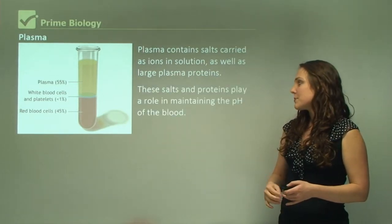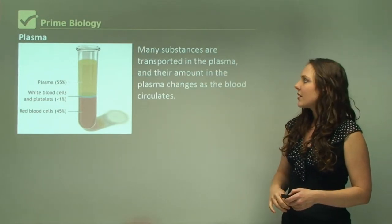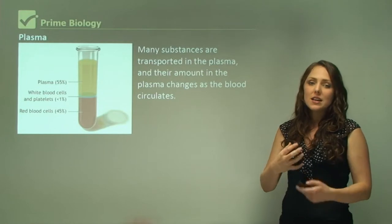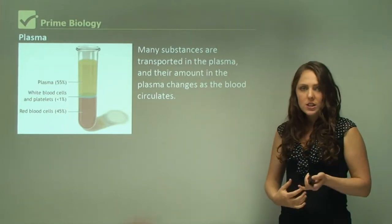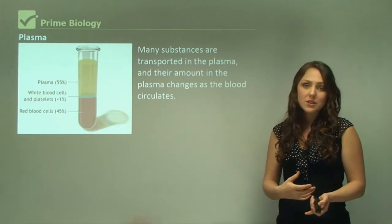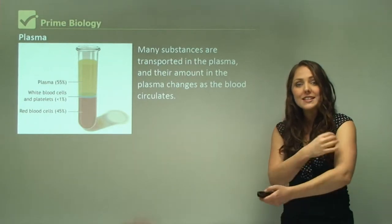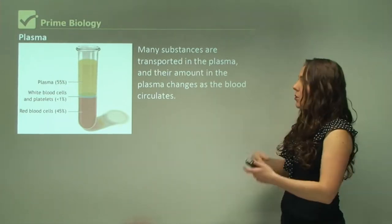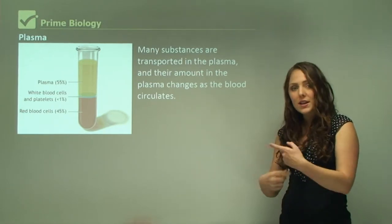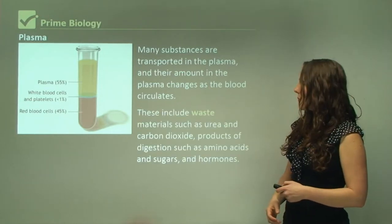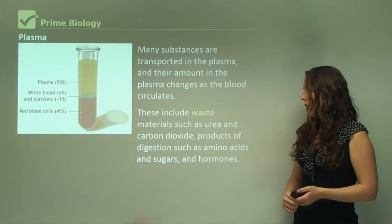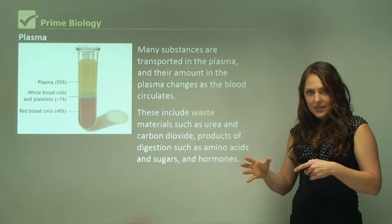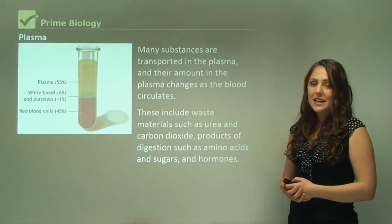These salts and proteins play a role in maintaining the pH of your blood. Many substances are transported in the plasma and their amounts change as the blood circulates. For example, blood pumping from the heart carries lots of oxygen; passing through the digestive system it picks up food substances like sugars; and delivering to cells it drops off oxygen while picking up carbon dioxide and waste. Substances transported include waste materials such as urea and carbon dioxide, products of digestion such as amino acids and sugars, and hormones.